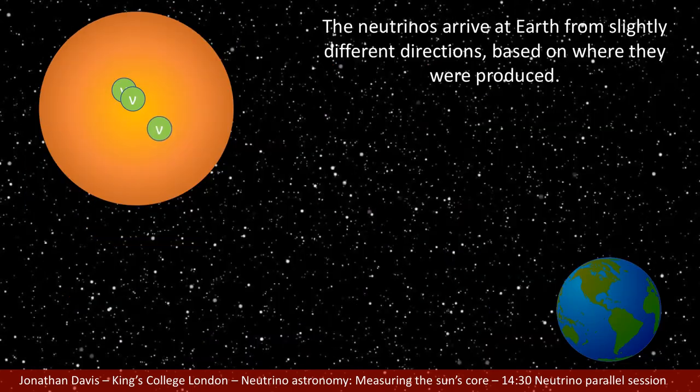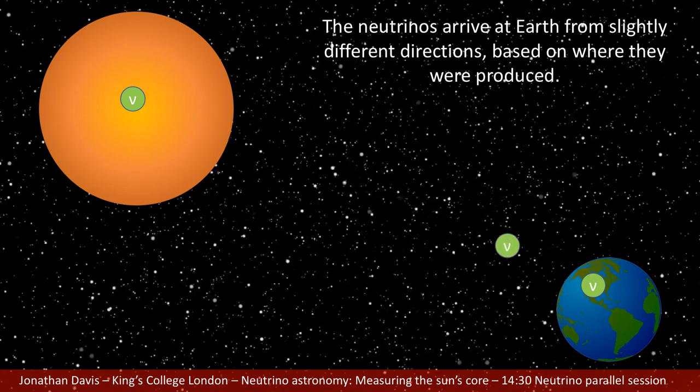Once neutrinos have been produced inside the Sun's core, because they are weakly interacting, they then travel through the material of the Sun itself towards Earth, with the directionality of these neutrinos bearing information on where they were produced inside the Sun.